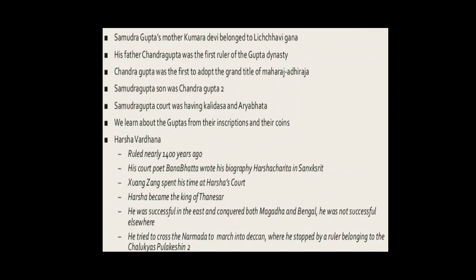While we can learn about the Gupta rulers from inscriptions and coins, we can find about some kings from biographies. Harshavardhana, who ruled nearly 1400 years ago, was one such ruler. His court poet, Banabhatta, wrote his biography, the Harshacharita, in Sanskrit. This gives us the genealogy of Harshavardhana and ends with his becoming king. Xuanzang, about whom you read in Chapter 9, also spent a lot of time in Harshavardhana's court and left a detailed account of what he saw. Harshavardhana was not the eldest son of his father but became king of Thanesar after both his father and elder brother died.